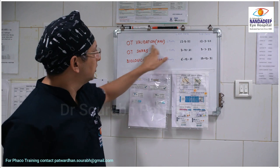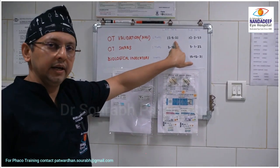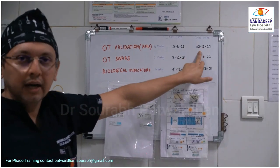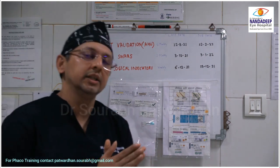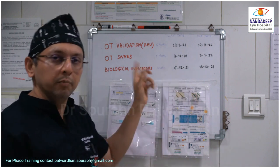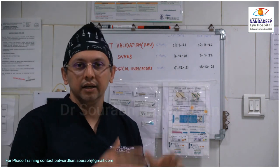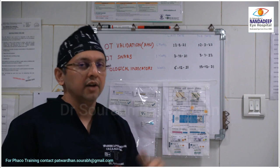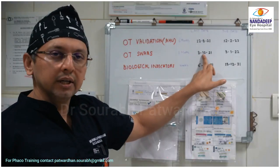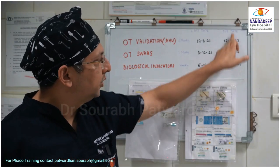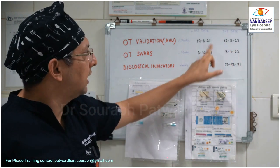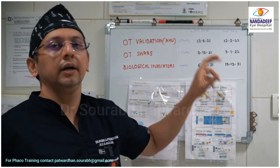The first thing is OT validation. You can see this is the last date when it was validated and this is the due date. The moment I walk in, I should know whether the OT has been validated. This validation is mainly for the air handling units with HEPA filters. If the air handling unit is not properly validated and maintained, it is as risky. You can see the due date is within a month, and if the last date has not been changed, I know it has not been done.